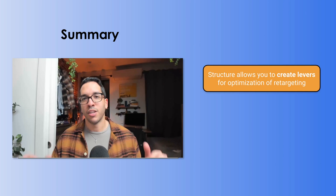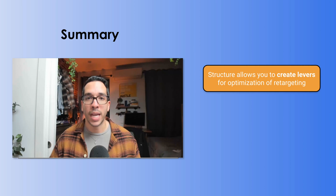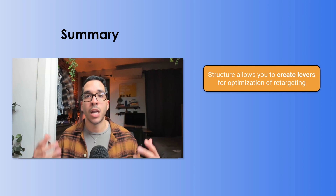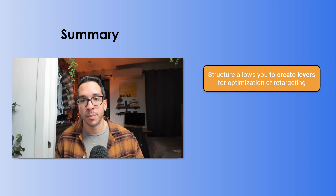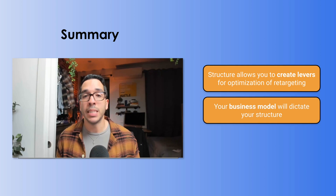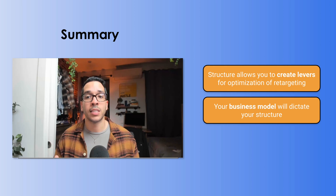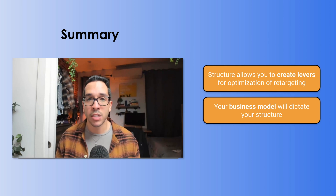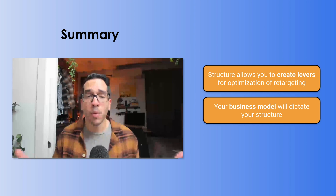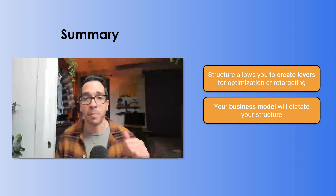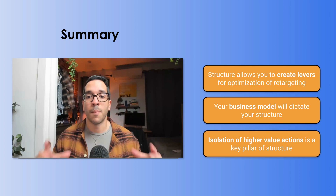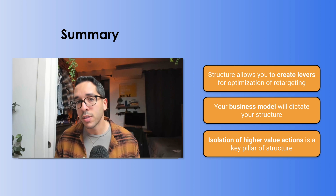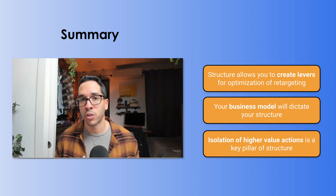In summary, structure gives you actual leverage over how campaigns deliver your media so you can optimize for the highest intent audiences. Test CBO versus ad set budget optimization to find what gives you the best result. Your business model will also dictate the structure you use — if you're a lead gen advertiser where conversions happen offline, you might want additional segmentation by gender or other details. The better you can isolate higher-value actions, the more effective your retargeting campaign structure will be.